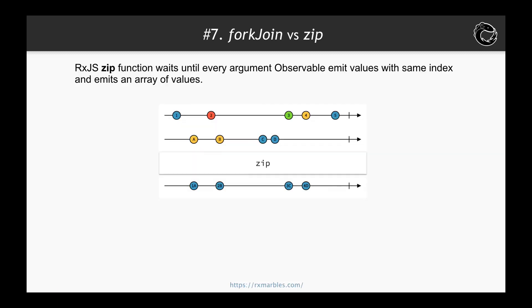Why only in this case? Because if you try to feed the zip function with observables that produce more than one value, you will get unexpected behavior — more than one emission.